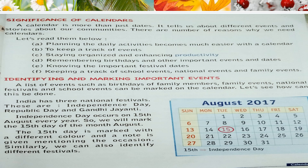Independence Day occurs on 15th August every year, so we will mark the 15th day of the month of August. As you can see in this picture, it is the picture of the month August 2017 and we have marked 15th August. The 15th day is marked with a different color and a note is given mentioning the occasion. Similarly, we can also identify different festivals, and you can see there is also a note explaining why we have marked 15th August — because it is Independence Day. So we can mark other festivals in the same way.